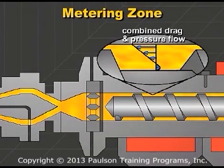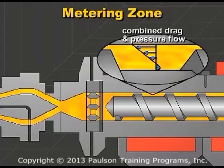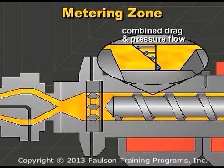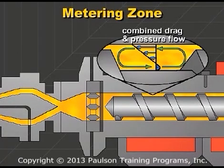If the pressure is small, the combined drag flow and pressure flow velocity profile looks like this. You can see there is a circulation of the plastic.